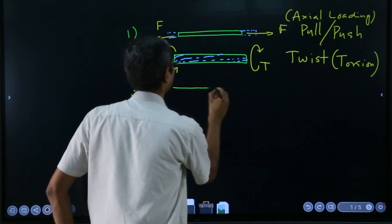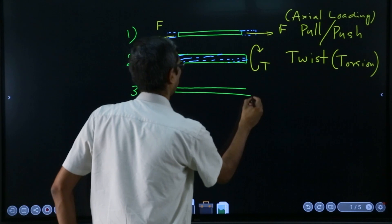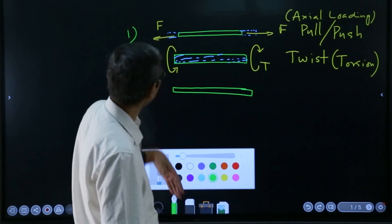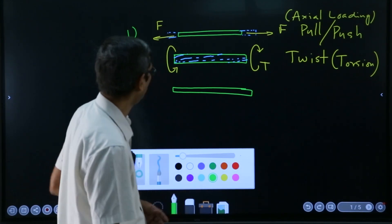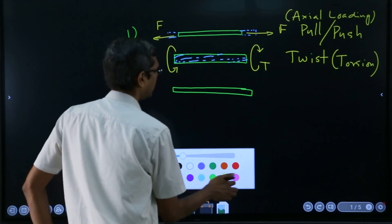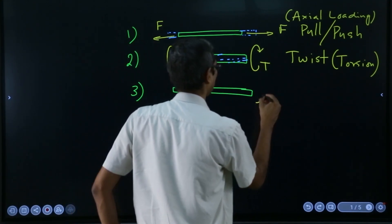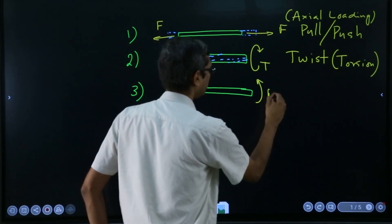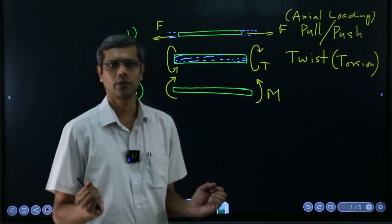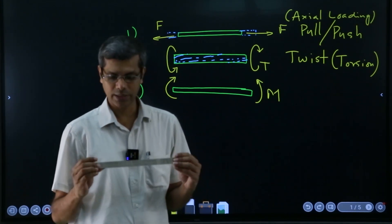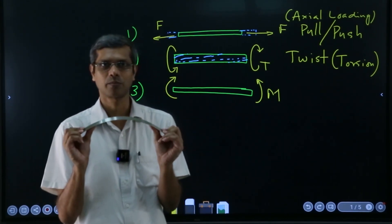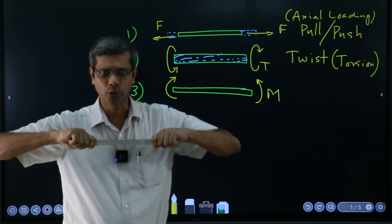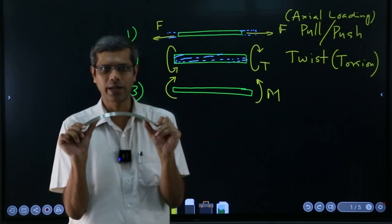If I have this, you can think of even all these things are this ruler only. Then the force which I am going to apply—the force or effort—is a moment, a bending moment. We are trying to bend. If I take this example, it is like this: I am trying to bend this. I am not trying to twist it, I am not trying to pull it, but I am trying to bend it.